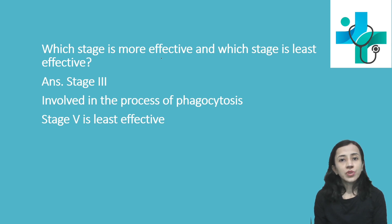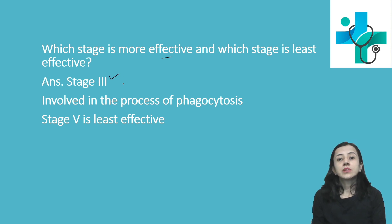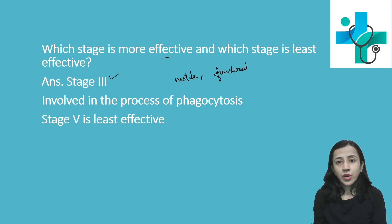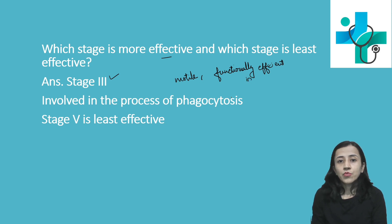Stage 3 is the most effective stage — it contains mature neutrophils that are most motile. This stage is also functionally very efficient in phagocytosis, making it the most effective stage for that function.